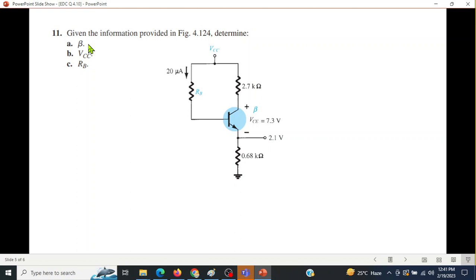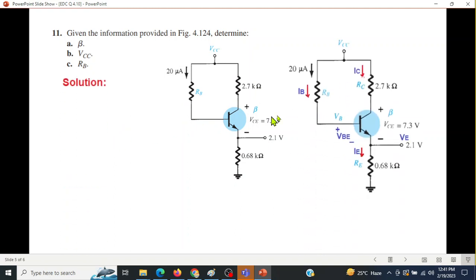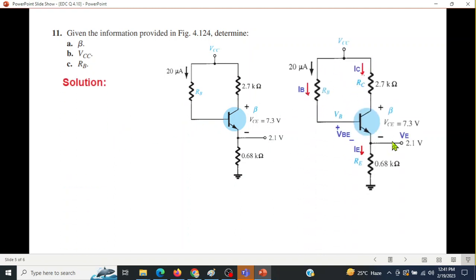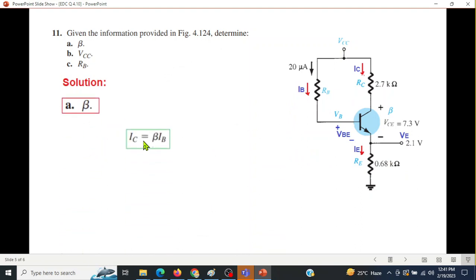So here also we mark the VBE, VE, and the three currents, and then we'll solve the question. So beta, we know we'll use this formula.